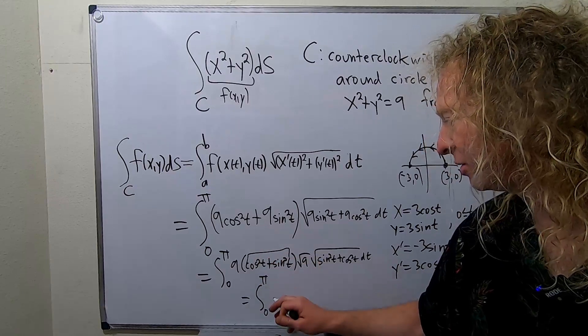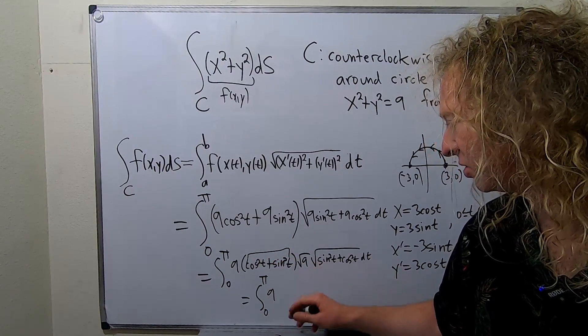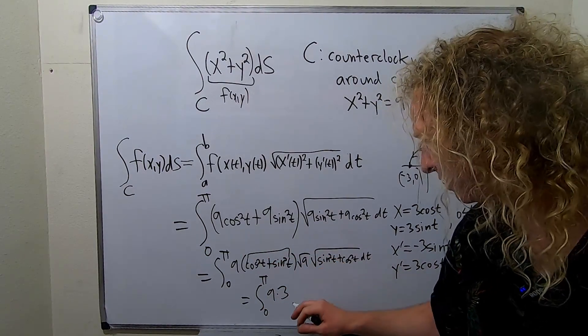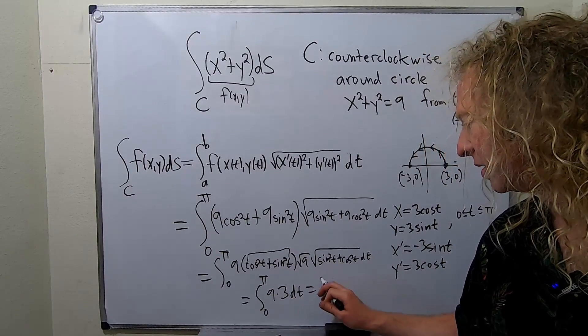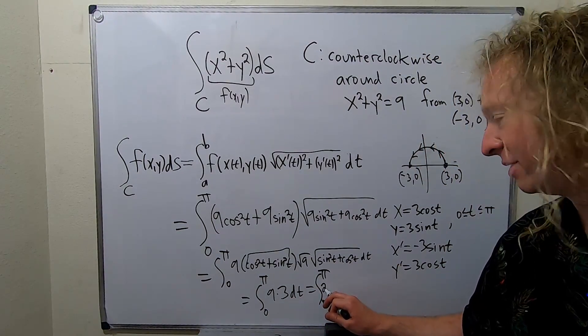This is just 1. So you just get 9 times 1. So you just get 9. This is just 3. This is the square root of 1. So it's 1. So you just get dt. So you get the integral from 0 to pi of 27 dt.